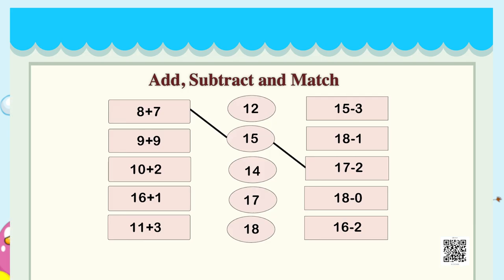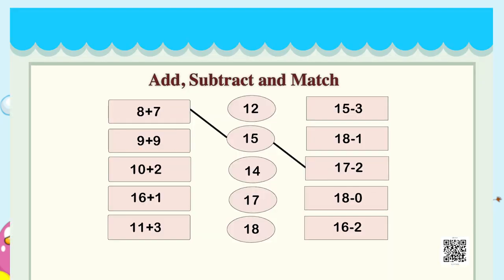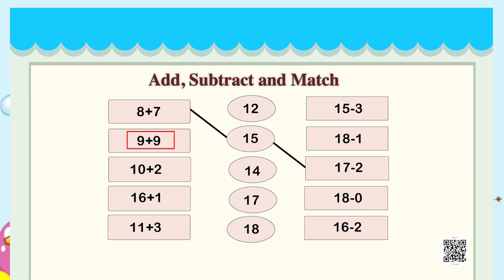Similarly, let's solve 9 plus 9. How much is 9 plus 9? Can you count using your fingers? We count together: 10, 11, 12, 13, 14, 15, 16, 17 and 18. So 9 plus 9 brings us to 18. And on the right side, if you observe carefully, we have 18 minus 0, which is also 18. So we match 9 plus 9 and 18 minus 0 to 18.